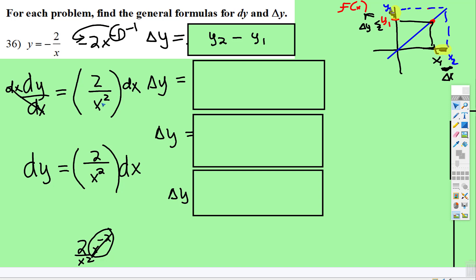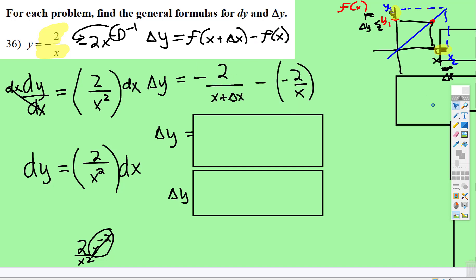So we have to, in this formula, in this formula right here, the original, where there's an x, we have to plug in x plus delta x, and then we subtract the original. So negative 2 over x plus delta x, subtract, remember, because this is y2 minus y1,